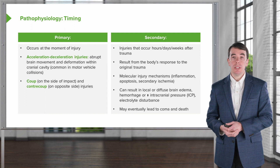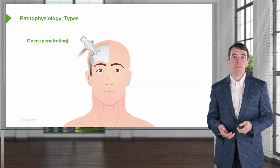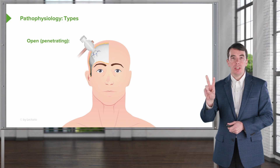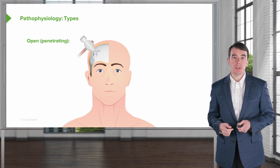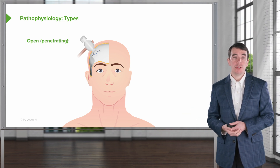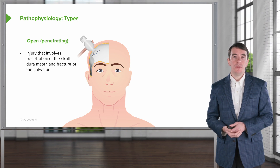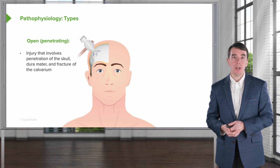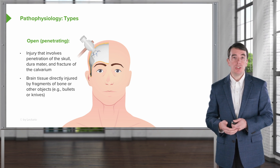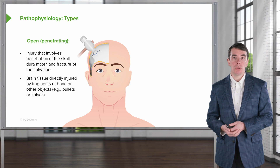These secondary injuries may eventually lead to coma, death, or long-term irreversible neurologic dysfunction. In terms of types of brain injuries, there are two broad categories: open and closed. Open brain injuries are penetrating — the injury involves some penetration of the skull, dura mater, or fracture of the calvarium, so the brain itself is exposed in some way. Brain tissue is directly injured by fragments, often of bone or other objects such as bullets or knives.